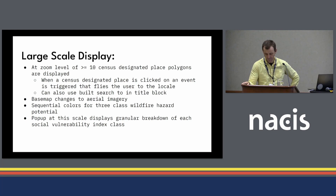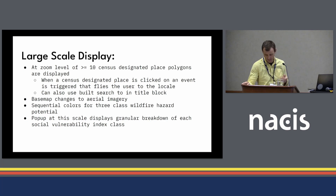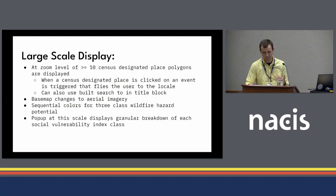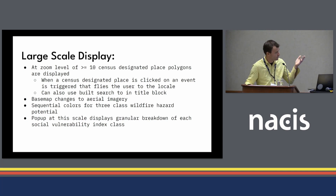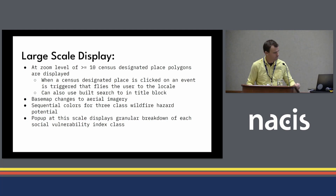At zoom levels greater than or equal to 10, the census-designated place polygons are displayed in their actual geometry. When a census-designated place is selected at the maximum scale, a fly-to event takes place and the map zooms automatically to that location. The base map changes to become an aerial image so the user can get an on-the-ground condition assessment, and there's a pop-up at this scale with a more granular breakdown of all the social vulnerability index themes. You can also use the search tool if you know exactly where you want to look to get to a specific area or census-designated place.